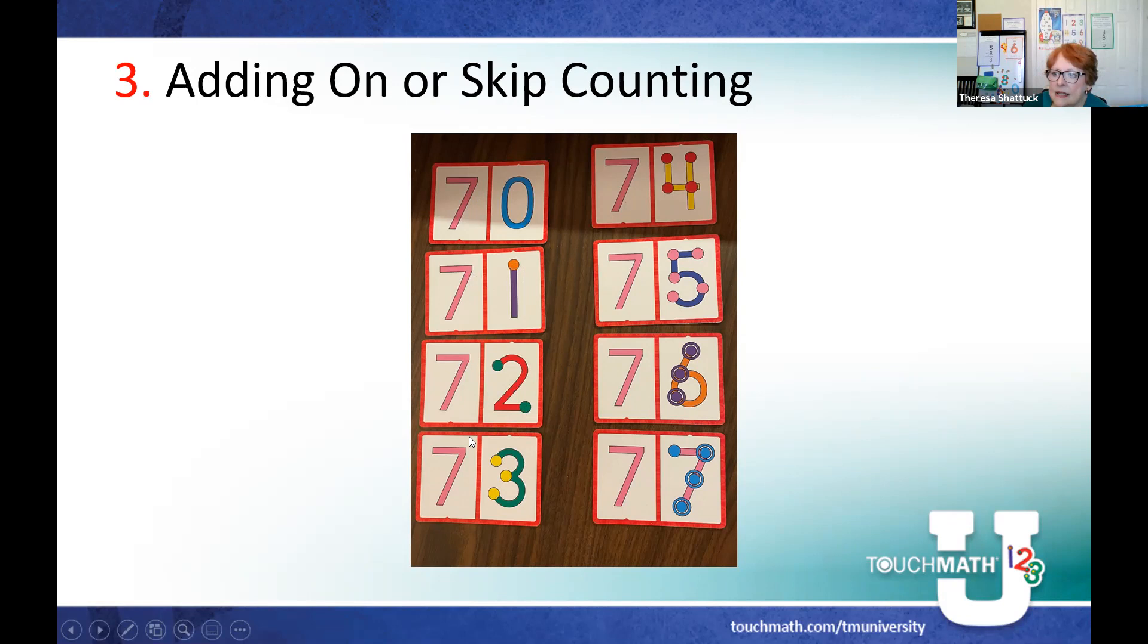Seven times three is seven, fourteen, twenty-one. Seven times four is seven, fourteen, twenty-one, twenty-eight. You'll hear me start to slow down now. Seven times five is seven, fourteen, twenty-one, twenty-eight, thirty-five. You're using your touch points and you're skip counting by the first number to get the answer to these multiplication facts.